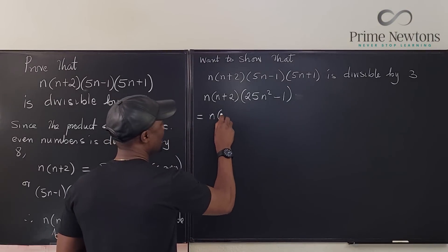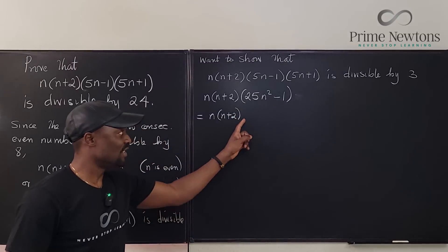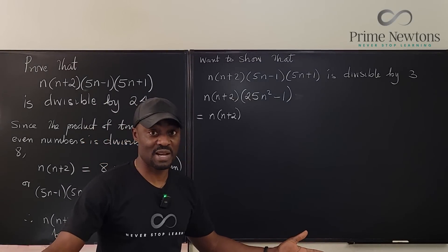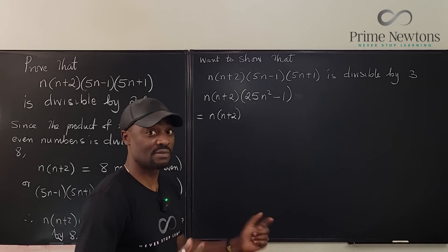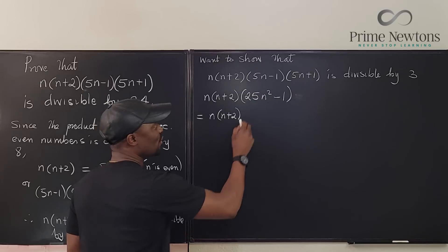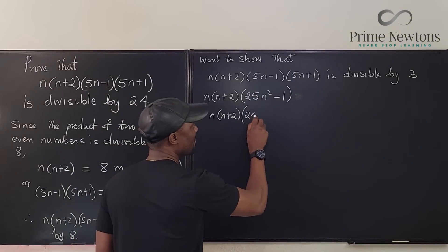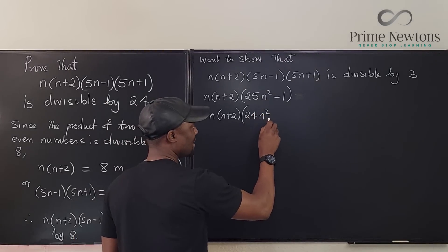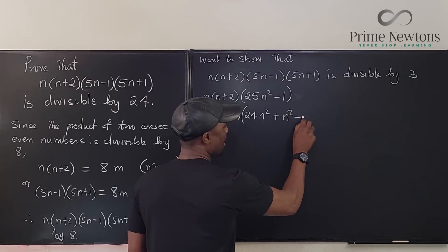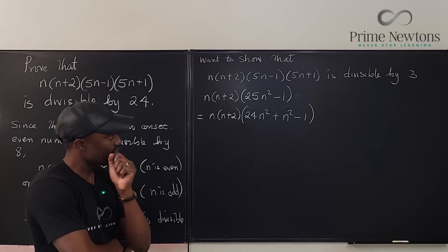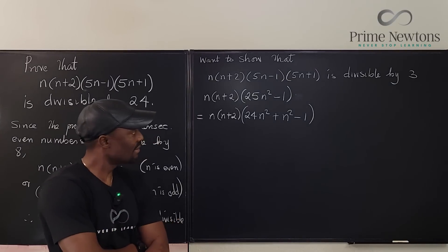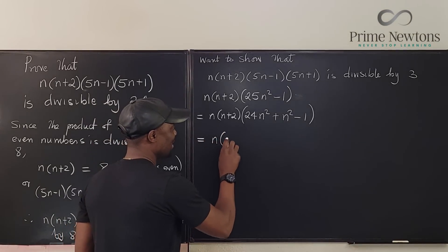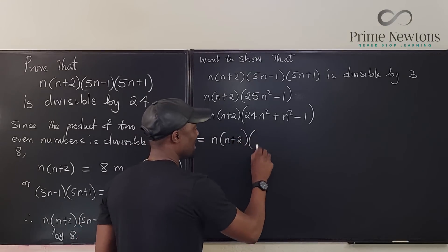This is equal to n times n plus 2. Remember if I could generate the product of three consecutive numbers it would be a multiple of three. One of them is divisible by 3. We've done that before. The product of three consecutive numbers is always divisible by 3. Now but I don't see that here, so what I'm going to do is I'm going to write this as 24n squared and then I'm going to write this as plus n squared minus 1.